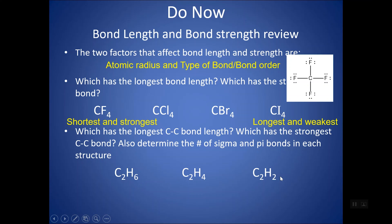Looking at bond length and strength, remember that's an inverse relationship — the longer the bond, the weaker the bond; the shorter the bond, the stronger. It all comes back to the Coulombic force of attraction. If you have two magnets and move them further apart, you don't feel that attraction as much as when you put those two magnets together. Distance and the force of attraction have a square inverse relationship.